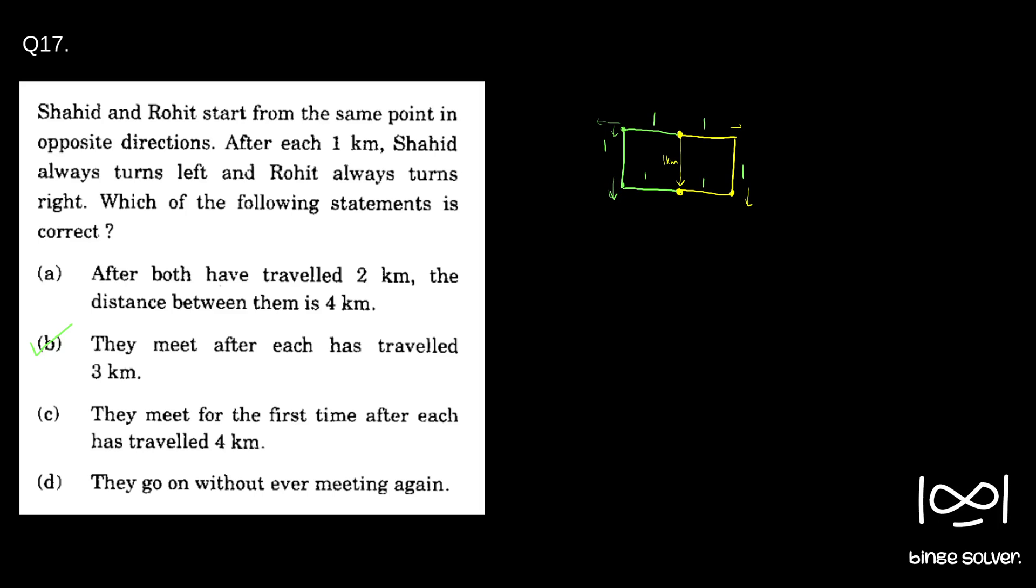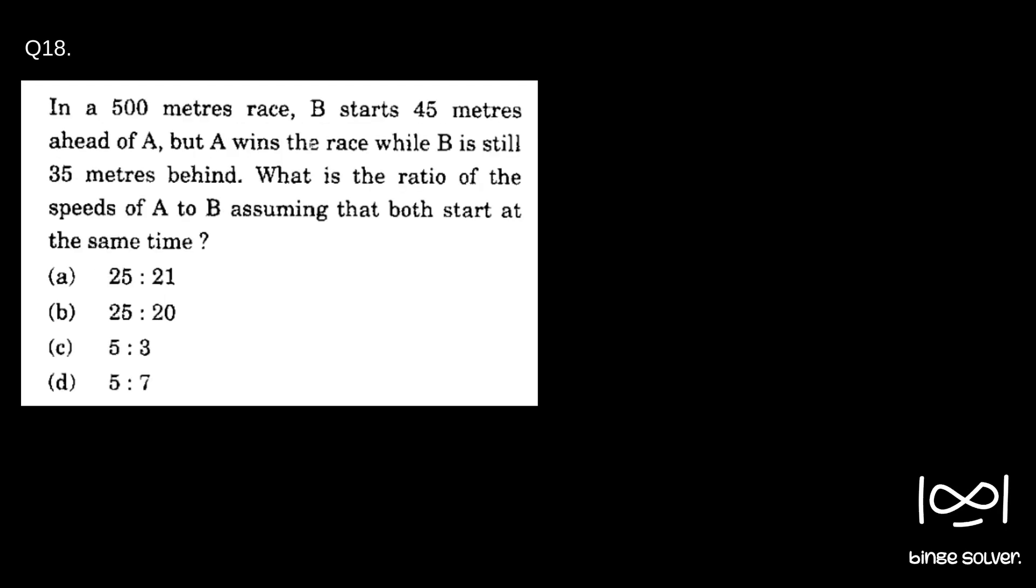Next question. Question 18. In a 500 meters race, B starts 45 meters ahead of A, but A wins the race while B is still 35 meters behind. What is the ratio of the speed of A to B assuming both start at the same time?